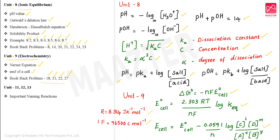The next topic is organic chemistry problems — that is Unit 11, Unit 12, and Unit 13. These involve important naming reactions and important reaction-related problems. For example: Cannizzaro reaction, cross-Cannizzaro reaction, aldol condensation, benzoin condensation, di-test, phenol bromination, and coupling reaction. Naming reactions are very important.